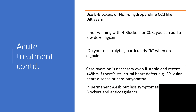If there is competition between digoxin and potassium, there can be digoxin toxicity. Cardioversion is necessary even if stable and even if less than 48 hours if there is a structural heart defect, like valvular heart disease or cardiomyopathy. You do not cardiovert in any permanent atrial fibrillation. If AFib is permanent but less symptomatic, use beta-blockers and anticoagulant.